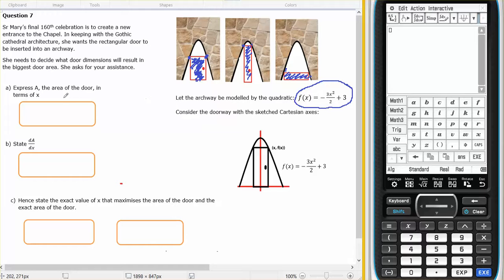So, express A, the area of the door in terms of X. The area of the door is the area of a rectangle, length times width. So that across there is 2X, and that up there is the height, f of X. So it's this times 2X.